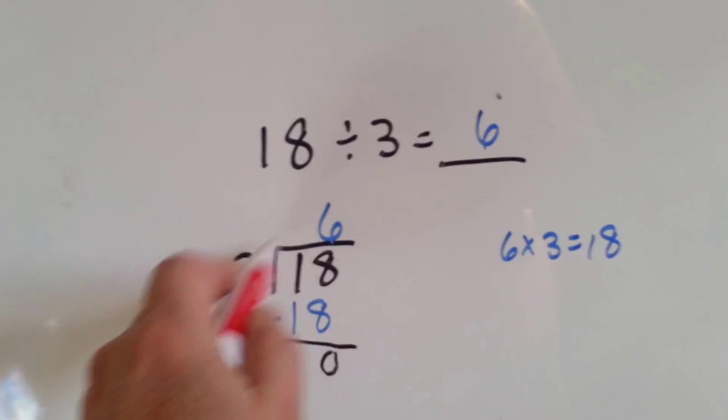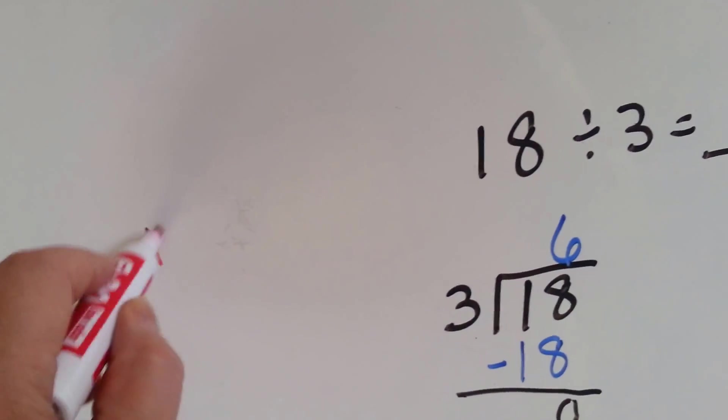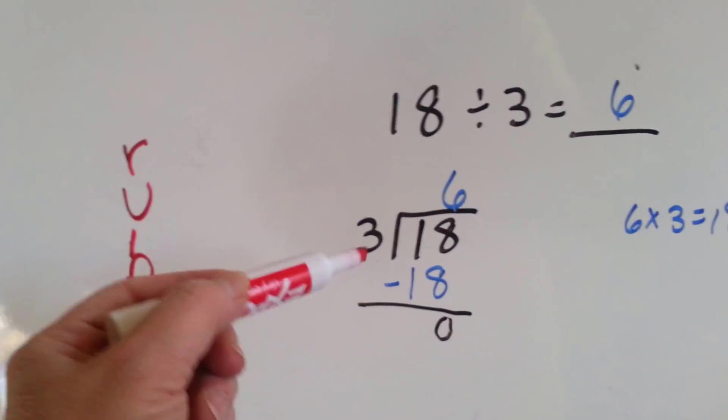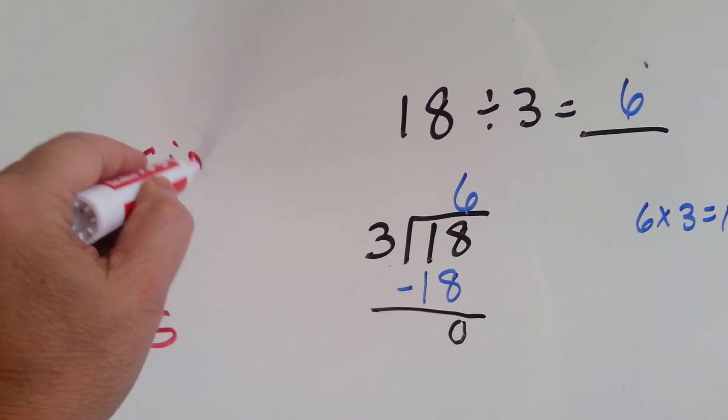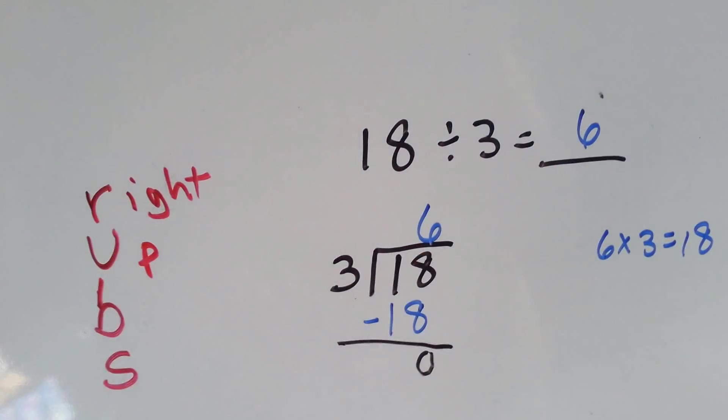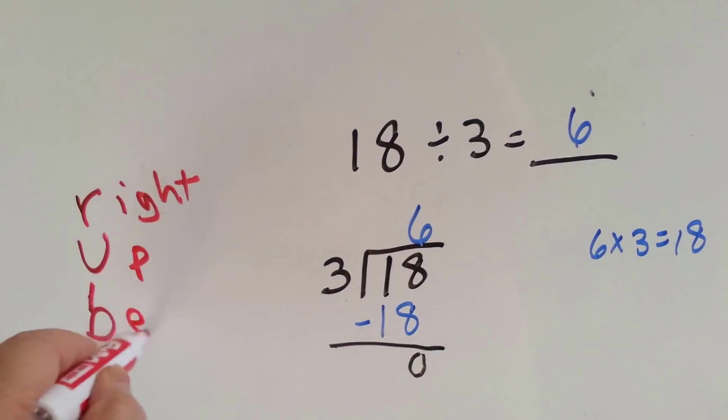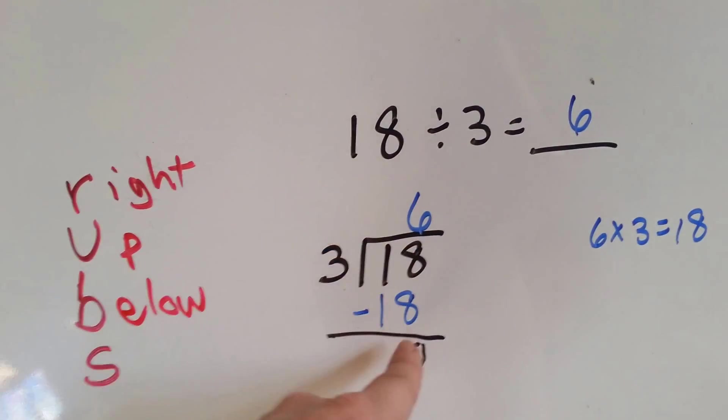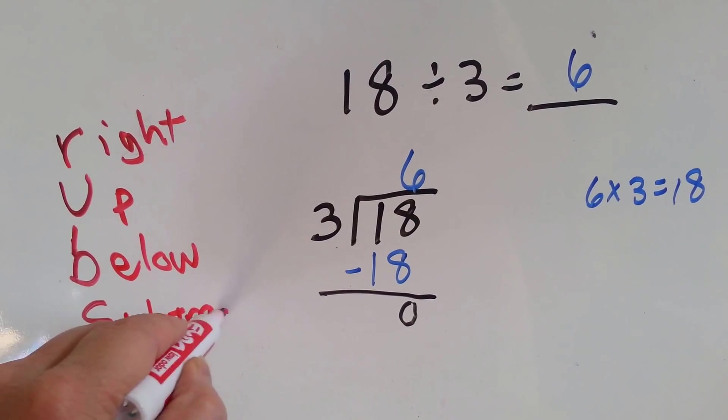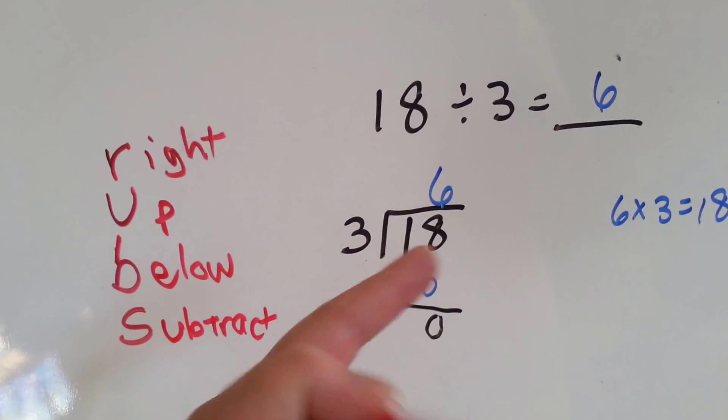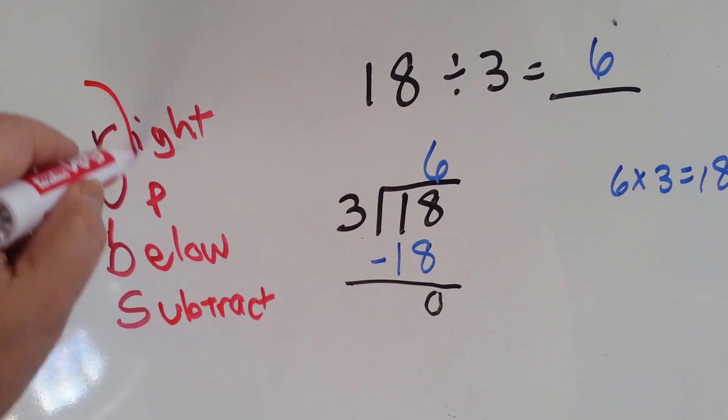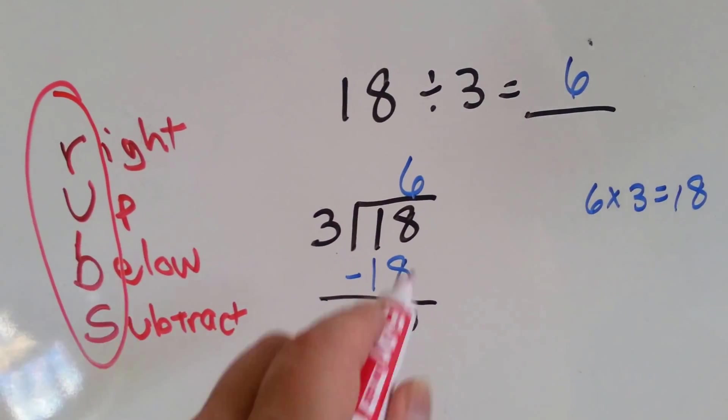Now, one way that I remembered how to do this was what I called RUBS. You go right into the number. You put the answer up here, so you go right, then you go up, then you go below. You put the answer below, and then you subtract. RUBS. You go right, you go up, you go below, and you subtract. So if you can remember RUBS, then you'll remember the order of how to do the long division.